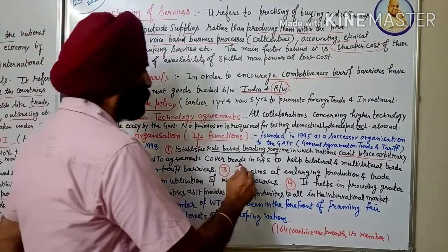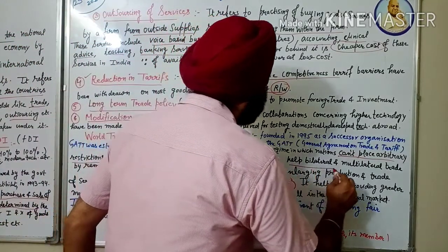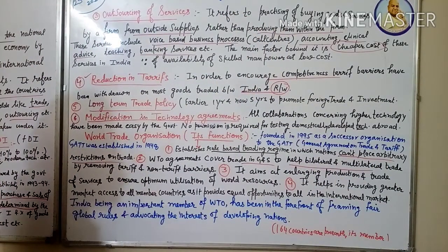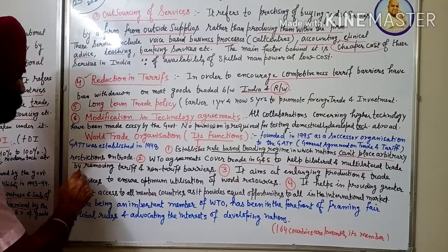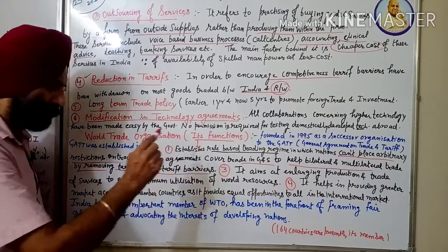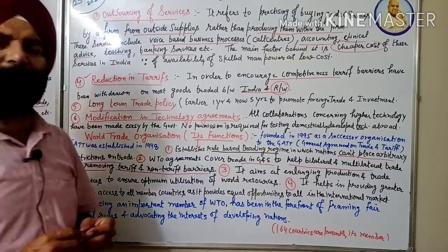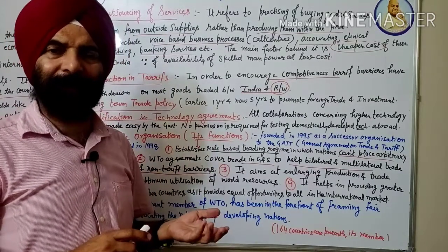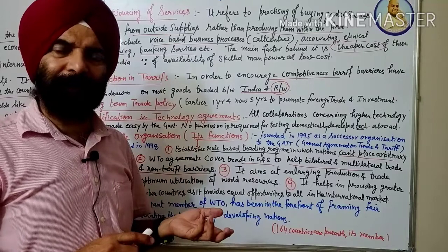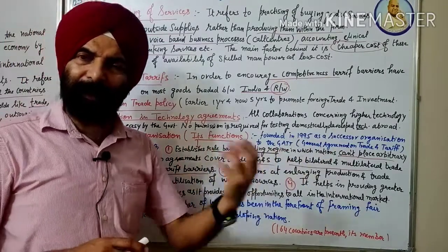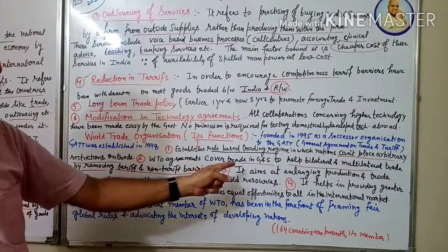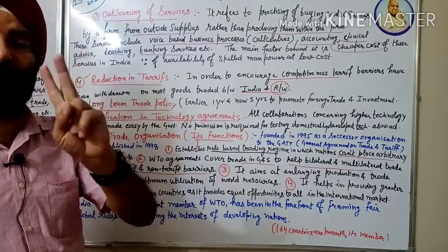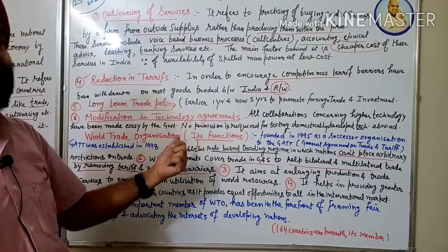Number two: It covers the trade in goods and services to help bilateral - between two countries - and multilateral trade by removing tariff and non-tariff barriers. Whatever tariff-related or other formalities are there, removing them to interconnect countries. To help bilateral or multilateral trade. This is the second function performed by World Trade Organization.